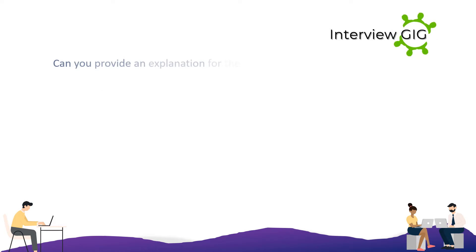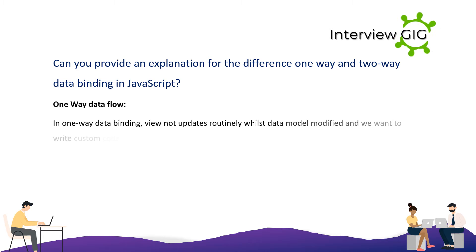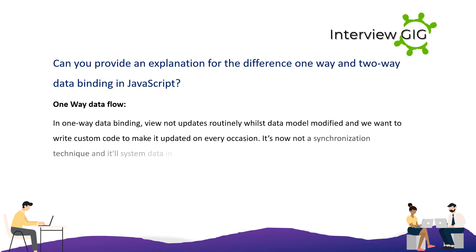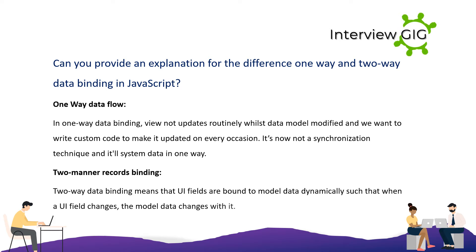Can you explain the difference between one-way and two-way data binding in JavaScript? In one-way data binding, the view does not update automatically when the data model changes, and we need to write custom code to update it. It is not a synchronization technique and processes data in one direction. Two-way data binding means that UI fields are bound to model data dynamically such that when a UI field changes, the model data changes with it.